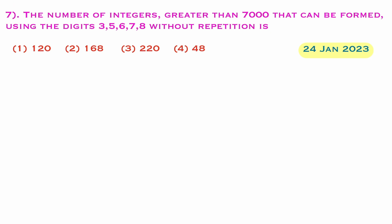In this question, what they are asking? The number of integers greater than 7000 that can be formed using the digits 3, 5, 6, 7, 8 without repetition. You need to find the number of numbers which are greater than 7000 that are formed using these digits.